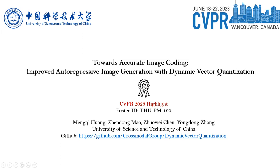Hi, my name is Meng Qi Huang, currently a PhD student at the University of Science and Technology of China. Today, I will introduce our CVPR highlight paper, which is titled "Towards Accurate Image Coding: Improved Autoregressive Image Generation with Dynamic Variable-Length Quantization."